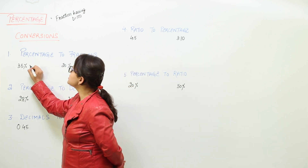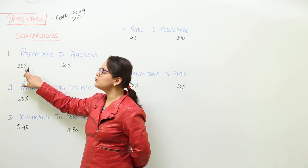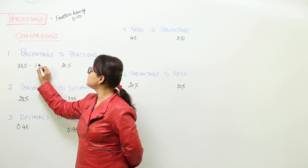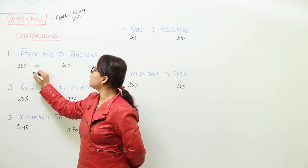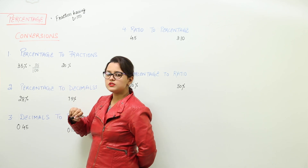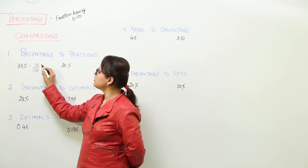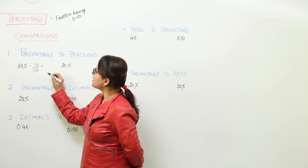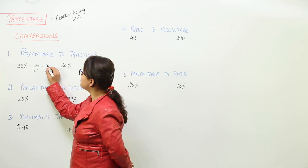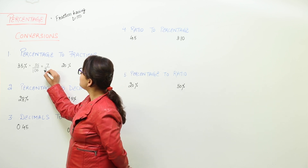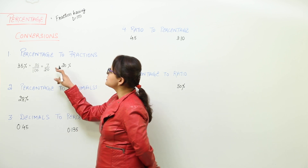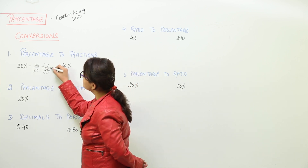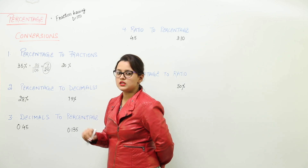We just want to remove this percentage sign. So what we do is write 35 upon 100. If you want, you can simplify it further by taking the common factors, which gives you 7 upon 20. That is the simplest form possible. So this is the answer for the first conversion.